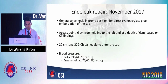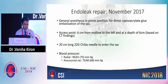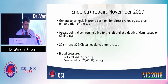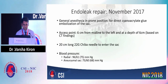We took him up for endoleak repair in November. We planned under general anesthesia in prone position for direct cyanoacrylate glue embolization of the sac. Based on the CT scan, we measured the access point 6 centimeters from midline to the left and at a depth of 6 centimeters. We used a 20-centimeter long 22-gauge EBA needle to enter the sac. These are the blood pressures — the radial arterial line blood pressure and the pressure measured in the aneurysm sac.